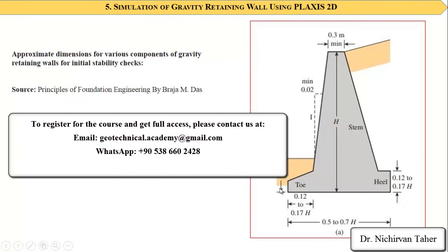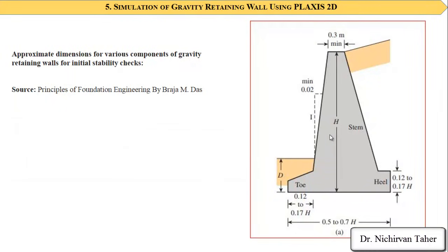This is just an assumption for initial stability checks. We will select the dimensions of the retaining wall based on these approximations and we will perform a stability analysis. If the factor of safety is okay, then we will not change it. If the factor of safety is lower than 1 or 1.5, we will change the dimensions of the retaining wall.